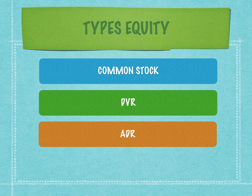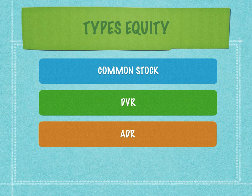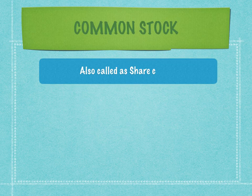ADRs are listed on the New York Stock Exchange, and we have a few companies in India like ICICI Bank and Infosys which have both common stock listed in India in rupees and ADRs listed in dollars on the New York Stock Exchange. I have already uploaded a video on ADRs, the link of which is shared below in the comment section. Common stock is also called share capital.